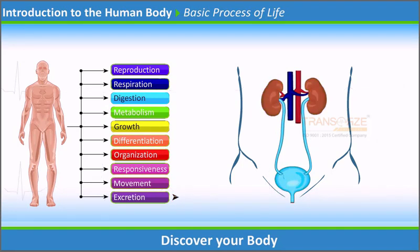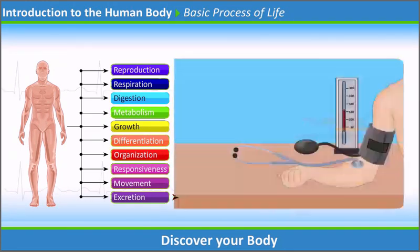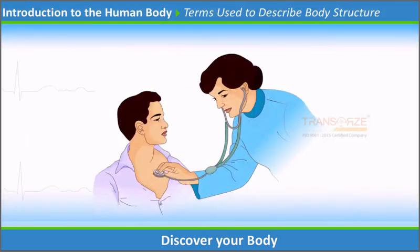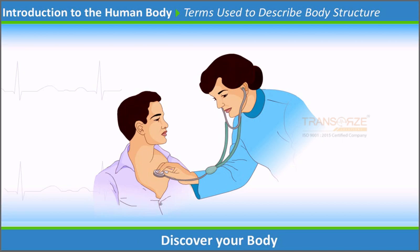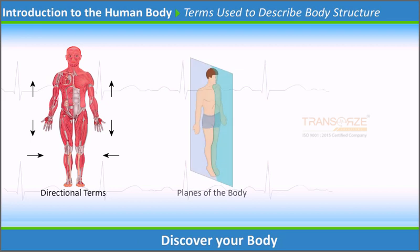The physical factors from the environment that play a role in the life process include water, oxygen, nutrients, heat, and pressure. The terms used in the field of medicine are different from the terms we normally use. For easy usage, such terms have been divided into three: directional terms, planes of the body, and body cavities.